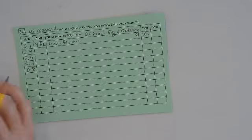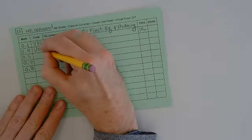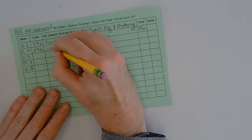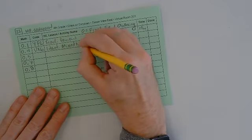How about this one? The next one is O4 was UX, six. And that is identify, identify mixed numbers.